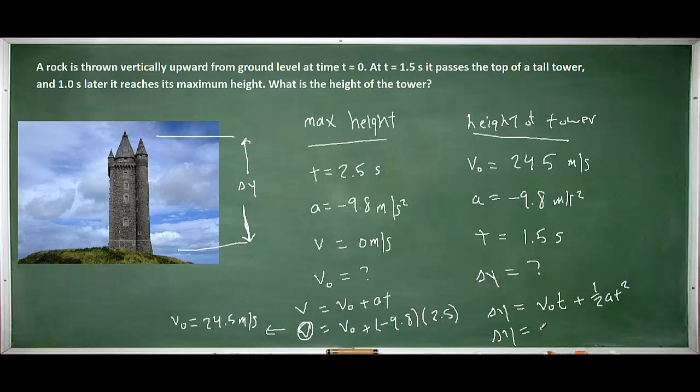And we'll simply plug in what we know for the stone's motion here. And I'm running out of room, but we'll be able to squeeze it in there. So the vertical displacement of the stone, and hence the height of the tower, should have turned out to be 25.7 meters.